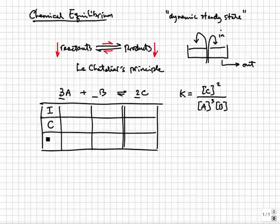In the second row, C stands for change. You write down the change in concentration for each reactant and product in order for it to reach equilibrium.